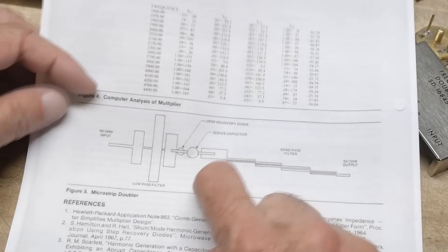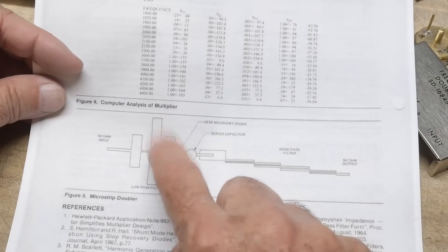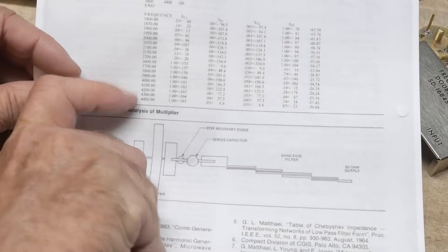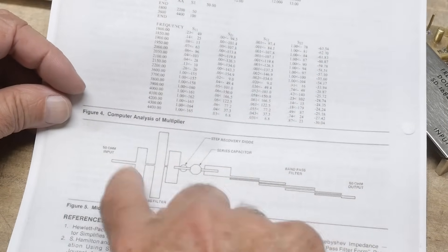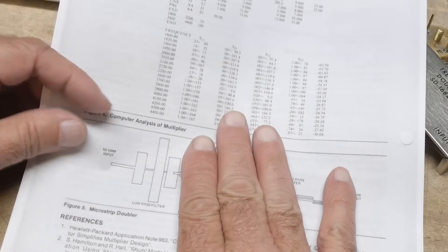So if this thing generates the 2 gigahertz and it goes that way, it'll find this open. It'll go, oops, can't go that way, and it'll bounce and it'll go that way. So it turns everything around and goes this direction. So that's the reason for the low pass filter.